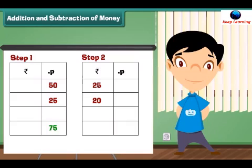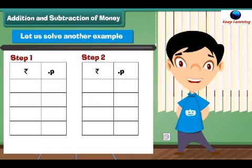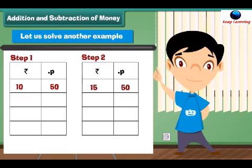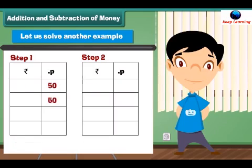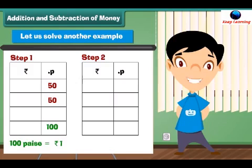Step 2: Add the numbers in the rupees column. 25 plus 20 is equal to 45 rupees. Write 45 under the rupees column. Next example: What is the sum of 10 rupees 50 paise and 15 rupees 50 paise? Step 1: Write the numbers in the correct column. Step 2: Add the paise column — 50 plus 50 equals 100 paise. Since 100 paise equals 1 rupee, write 00 below the paise column and carry 1. Then add the rupees column: 1 plus 10 plus 15 equals 26 rupees.